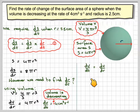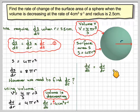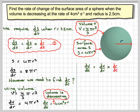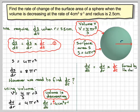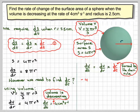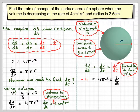We can say that dv/dt equals dv/dr times dr/dt. Pause the video now to see what you would add in here. That will be what we're trying to find, which is dr/dt. We have dv/dr and we have dv/dt, so we need to calculate dr/dt. So dv/dt is minus 4 and dv/dr is 4π r².